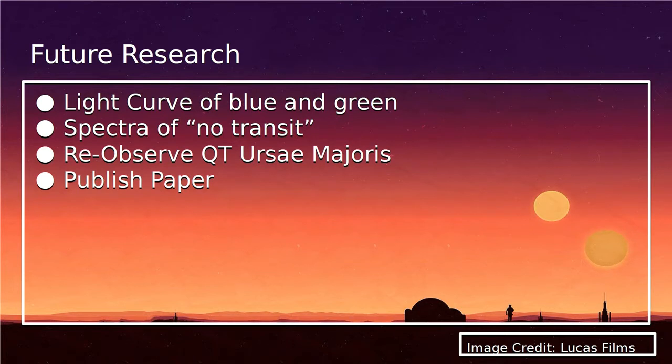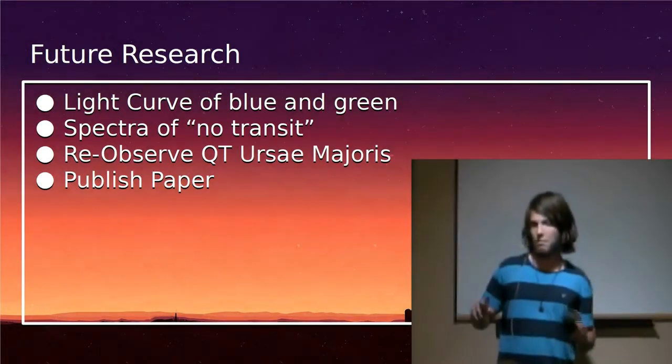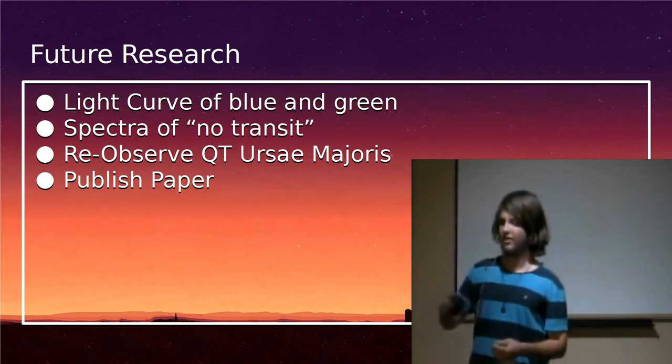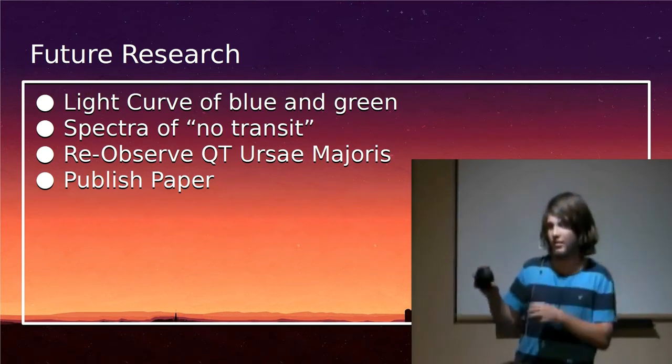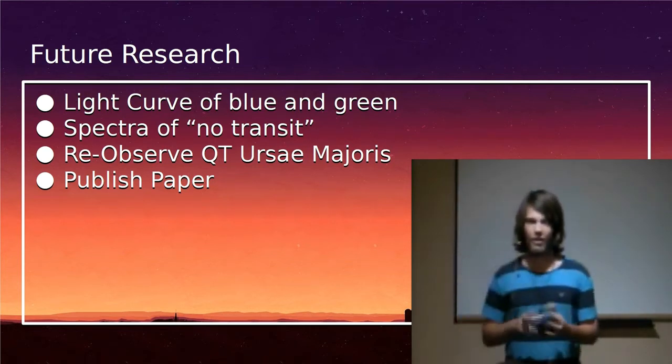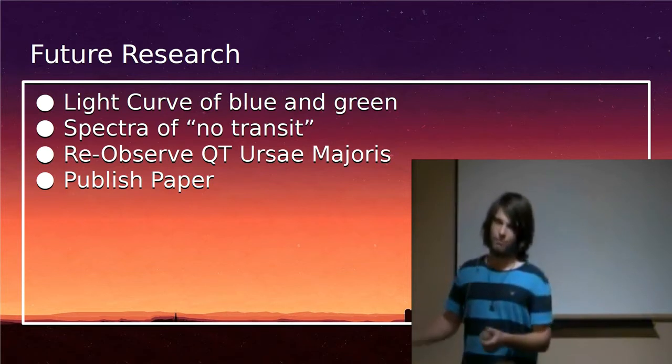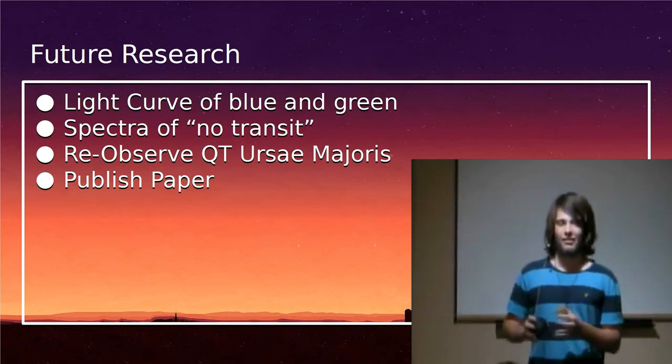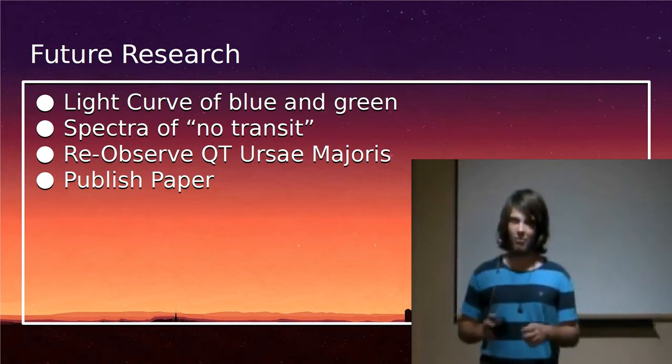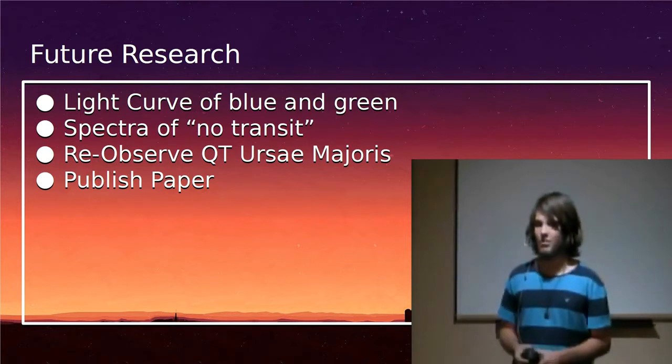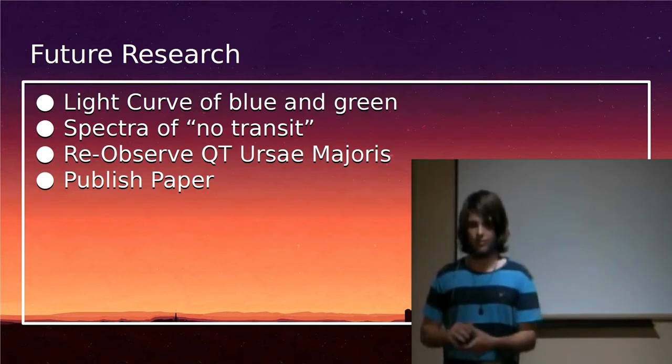So therefore, because we only are seeing the big star, we don't need to do any weird funky math to try and get the temperature like I need to do with the B star, which I have not done yet because I still need more data. Future research, I need to get the light curve of the blue and green spectra. The light curve I got was only of the red spectra. I didn't need that to get this far in the project, but it'd be nice to have just so I can show you the difference in how each light is. I need to get the spectra of the no transit in order to find out the temperature of the B star.